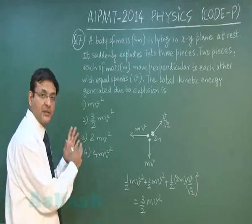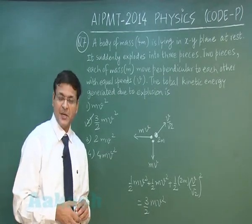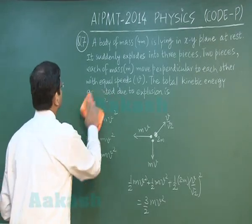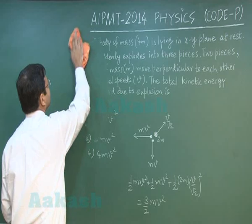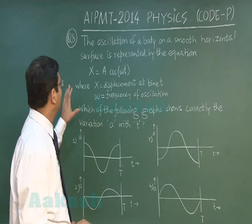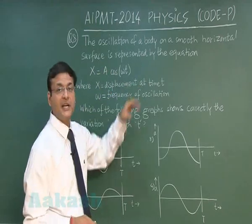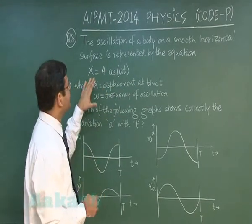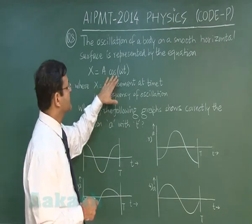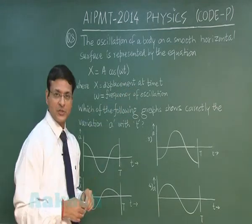The most appropriate option for this will be the second one, and that explains question number 7. Now let us discuss the next question, question number 8. This question reads: the oscillation of a body on a smooth horizontal surface is represented by the equation x equals A cos(ωt). This is an equation of simple harmonic motion where x is displacement at time t and ω is frequency of oscillation.